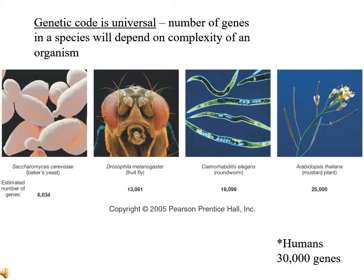The genetic code is universal. But the number of genes in a given species will depend on the complexity of a given organism. Looking at this illustration, we can see that a rather uncomplex organism like the yeast has about 6,000 genes, whereas the human has about 30,000 genes. The number of genes determines the number of different kinds of proteins that will be produced by a given organism.